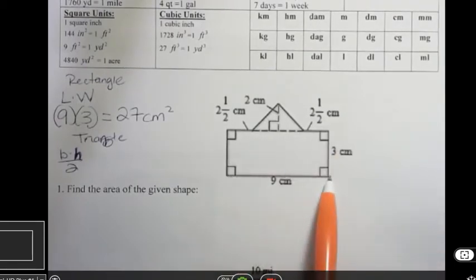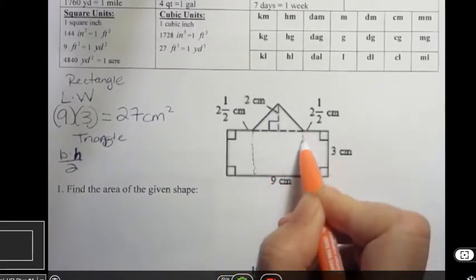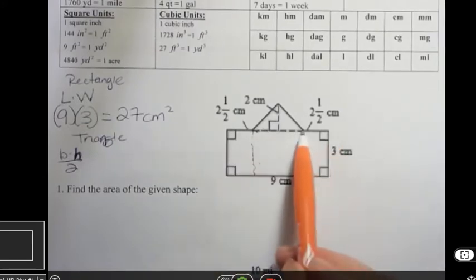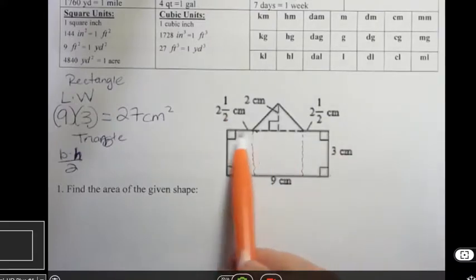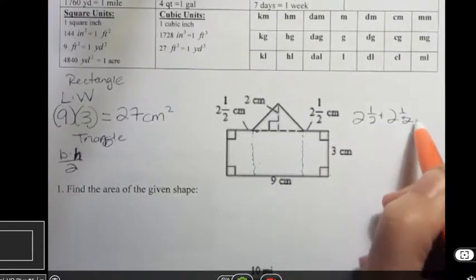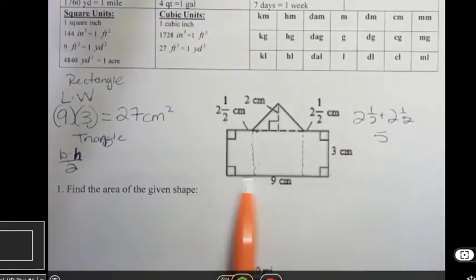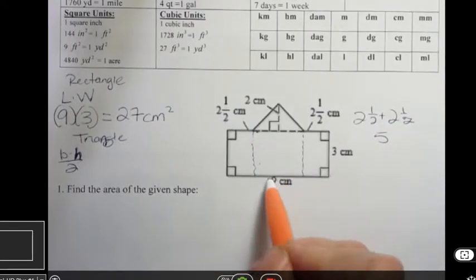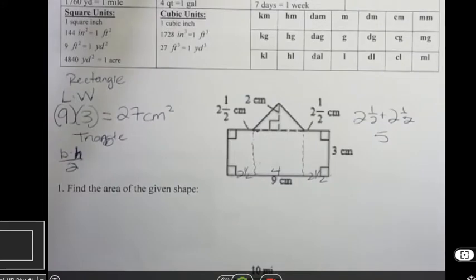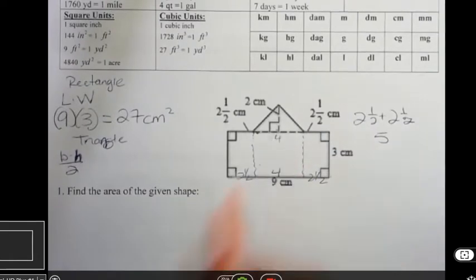Well, I know that this entire base is 9, so if I come down like this, I can see that this part would be 9 minus what's over here and what's over there. What's over here is 2 and a half, and what's over here is 2 and a half, and I know that 2 and a half plus 2 and a half is 5. So this part in here must be 4, because this is 2 and a half and this is 2 and a half, and the other part must be 4, which tells me that I have a base for my triangle that's 4, because that could slide straight up there.